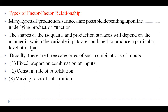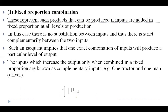The first category is fixed proportion combination of inputs, the second is constant rate of substitution, and the third is varying rate of substitution. In fixed proportion combination, inputs are added in fixed proportion at all levels of production. In this case there is no substitution between inputs — underline this point: there will be no substitution between inputs.